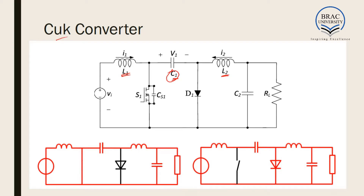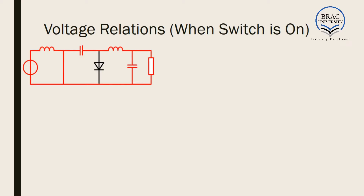For mathematical analysis of the Cuk converter, we will again look at the on-states and off-states. Here we can see there are two inductors, L1 and L2. So we have to consider L1 and L2 separately, because for both of them the integration of the voltage across the inductor over one complete cycle is zero. Firstly, we are considering L1.